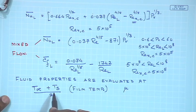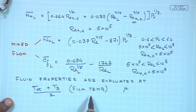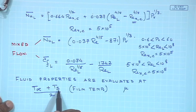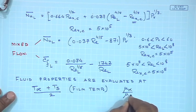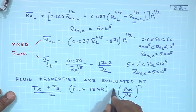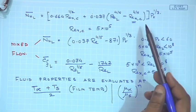In some cases all properties are evaluated at film temperature, and if there is substantial variation between T∞ and Ts, a correction factor (μ∞/μs)^n is sometimes added to the expressions to account for the strong change in viscosity between the surface temperature and the free-stream temperature.